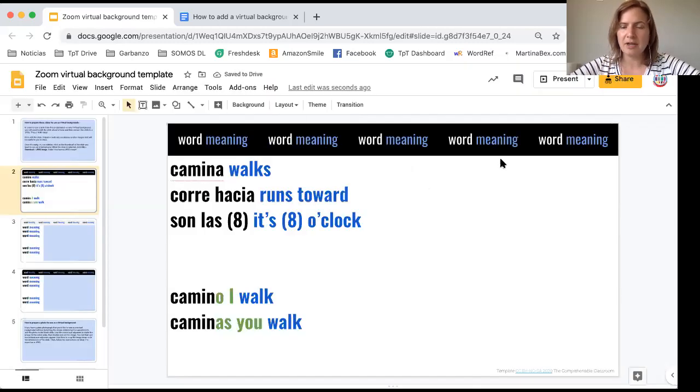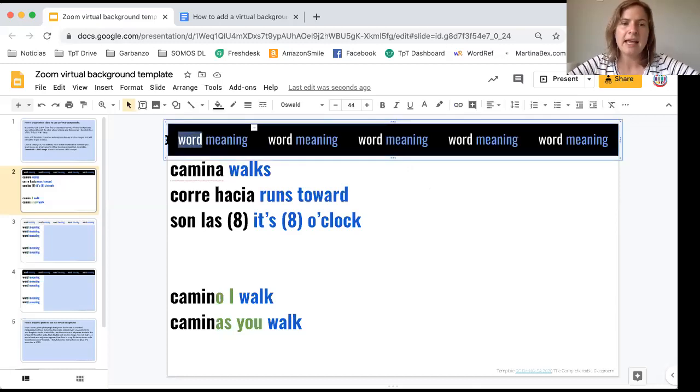And then along the top here you see some words. These are supplemental words that are going to help with the story but are maybe not necessarily core words. This is a table. So this is a table with one row and five columns.